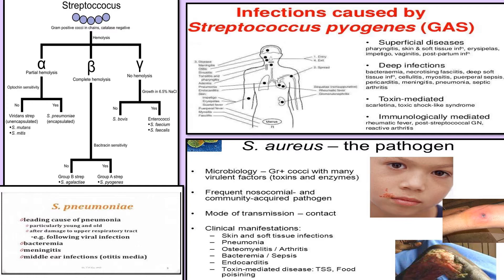Staphylococcus aureus is the most important coagulase-positive bacteria, with virulence factors including protein A, beta-lactamase, enterotoxin, toxic shock syndrome toxin, and exfoliating toxin causing scalded skin syndrome. MRSA — methicillin-resistant Staphylococcus aureus — is a deadly hospital-acquired infection. Staph aureus also causes endocarditis and is the most common bacteria causing osteomyelitis. Staph epidermidis causes infections of IV catheters and prosthetic devices.